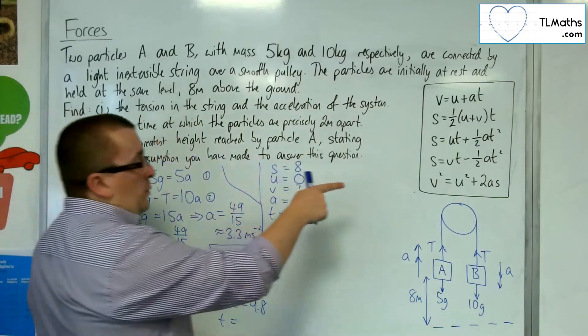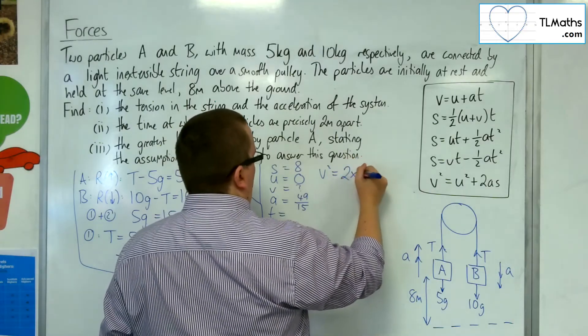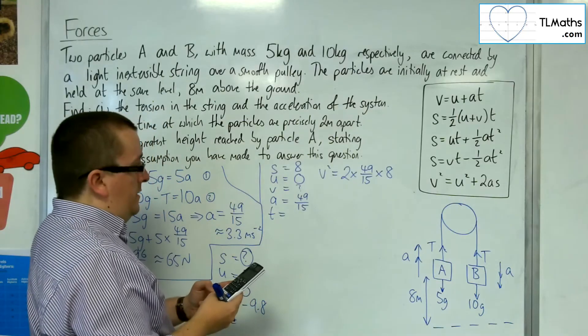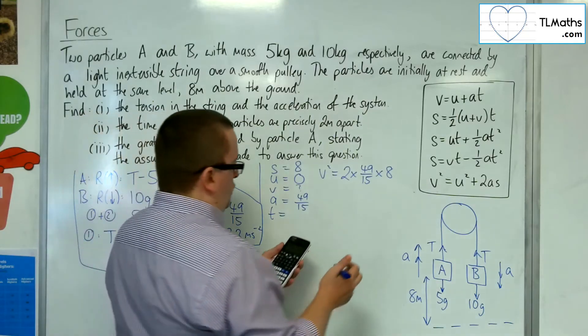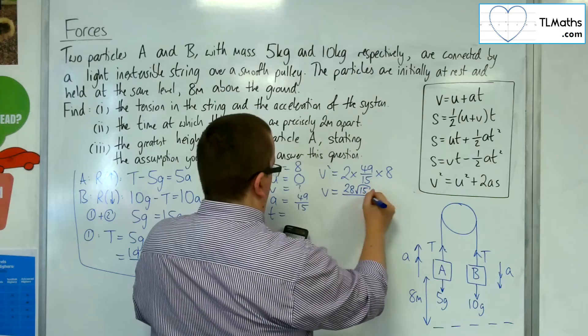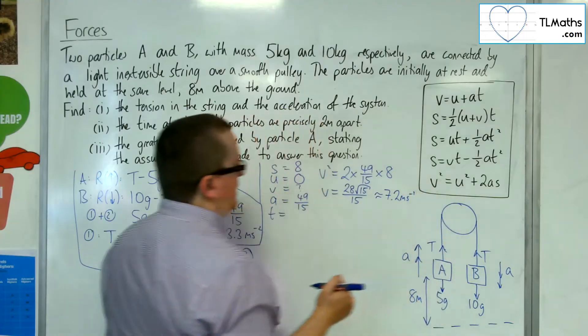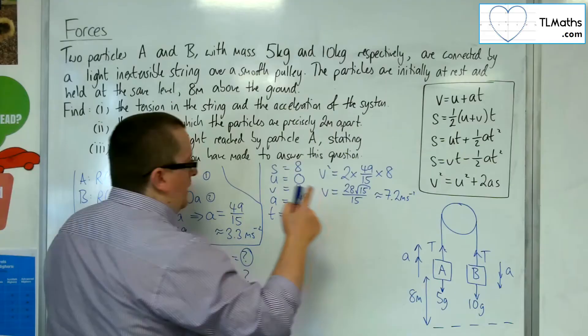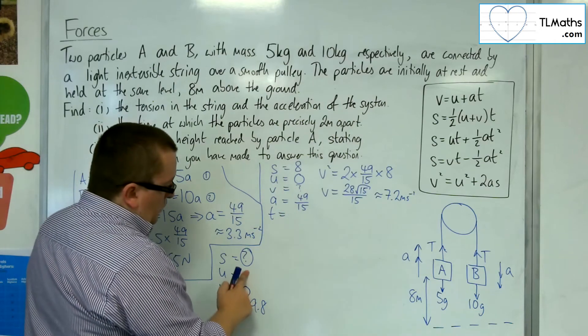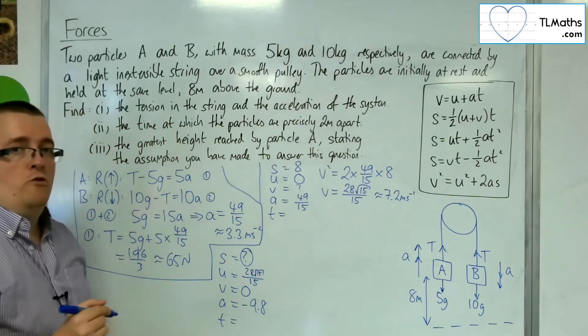So, let's find that velocity. So, we want the equation that doesn't have T in it, which is the fifth one. So, V squared is equal to U squared, which is zero, plus two lots of A times S, okay. So, 2 times 49 over 15 times by 8 is 784 over 15. So, square root that, and I get V is 28 root 15 over 15, which is approximately 7.2 meters per second per second, okay. So, that is the final velocity at the point when B hits the ground. So, this will be the initial velocity down here, okay, when we're in free fall, effectively.